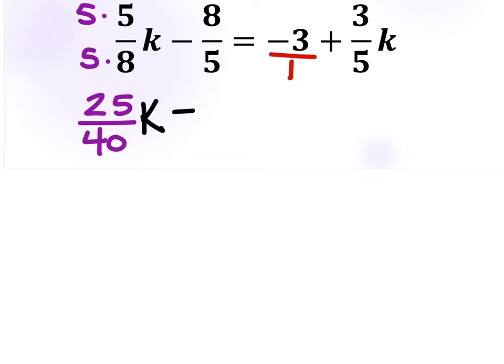This will be minus. Let's do this next term. 5 times 8 would give us the 40. So we'll multiply the 8 by 8 as well. And we get 64 40ths.